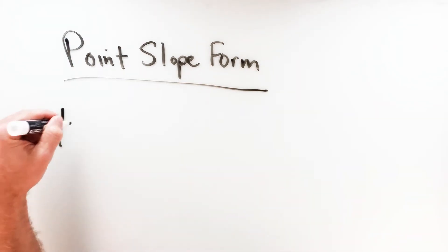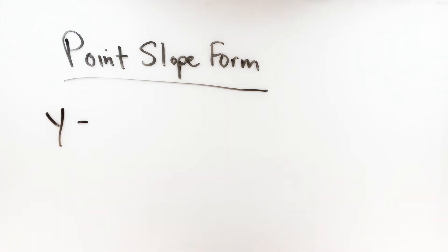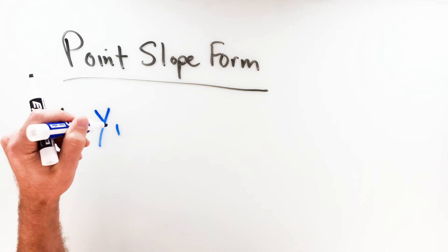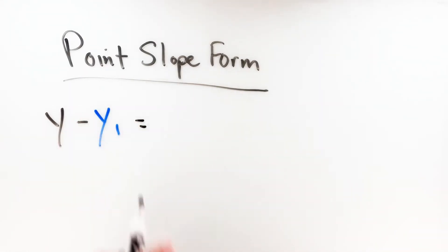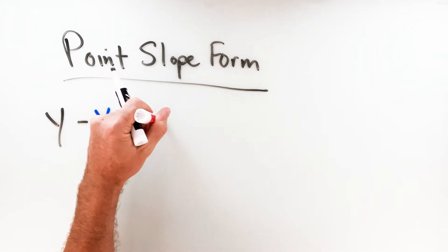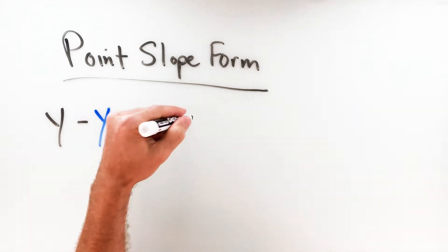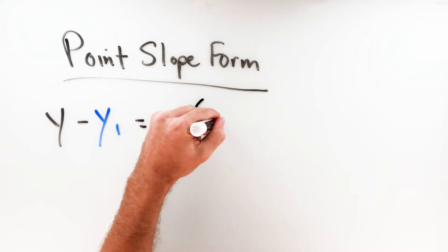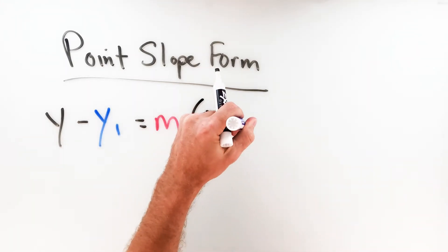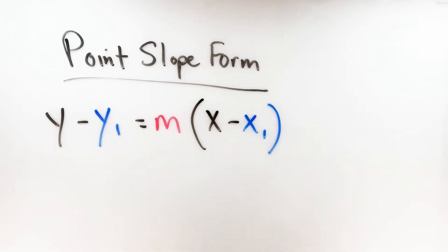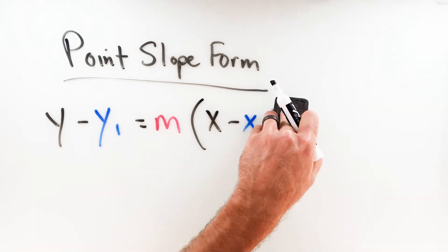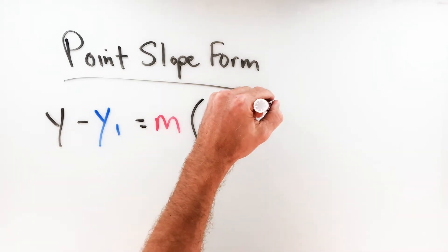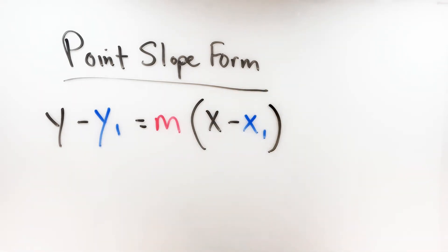It looks like this: y minus y sub 1 equals m times parentheses x minus x sub 1. Now there's a reason for the color coding, which I'll explain in just a second. But there should be a couple of things that are familiar here. First of all, if you've graphed lines and written equations of lines, you've probably seen the m — the m stands for the slope.